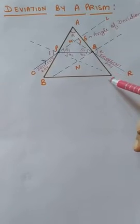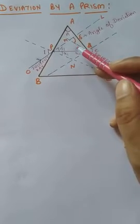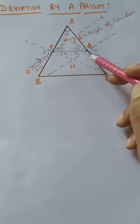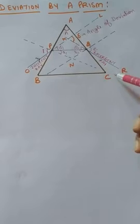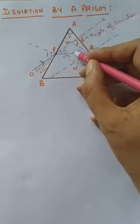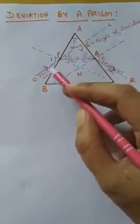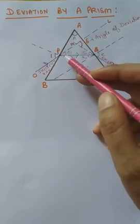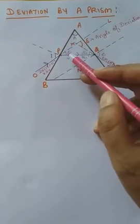Now this refracted ray PQ strikes on the second surface of the prism and suffers refraction again. It goes from glass to air, meaning from denser to rarer medium, so it will bend away from the normal. This will be the emergent ray. If there were no prism, the incident ray would go in a straight line path, but due to the prism it deviates away from the path and this angle is delta one.